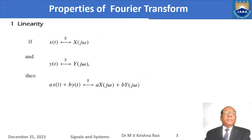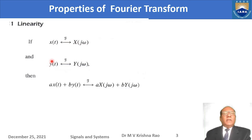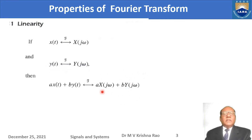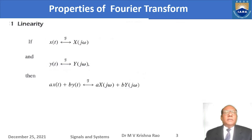The first property is linearity. Two signals are given: X of t whose Fourier transform is capital X of omega, and Y of t whose Fourier transform is capital Y of omega. If I take a linear combination of these two signals and find their individual Fourier transforms, they also add up in the same proportion as the signals are added. That is the property called linearity.